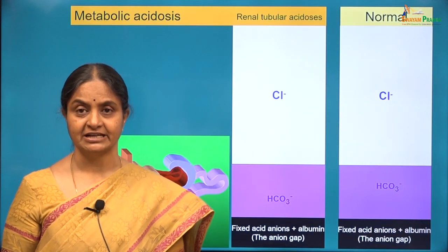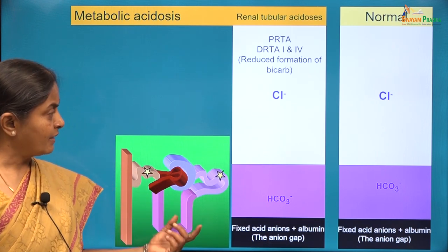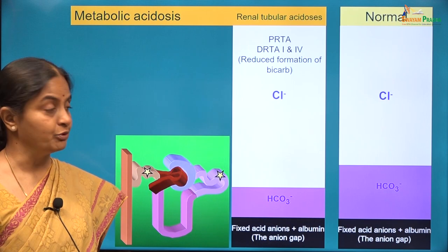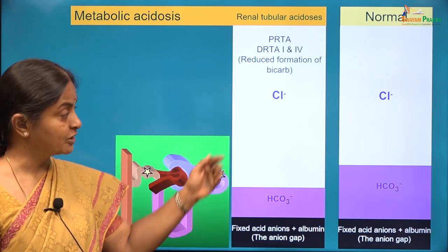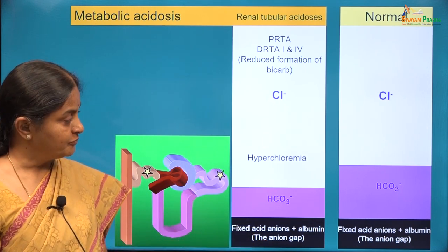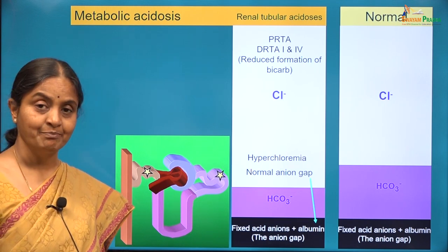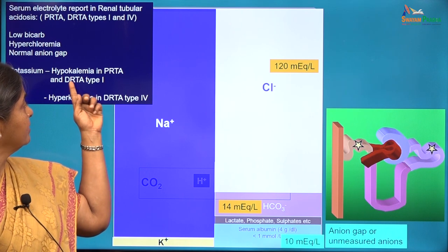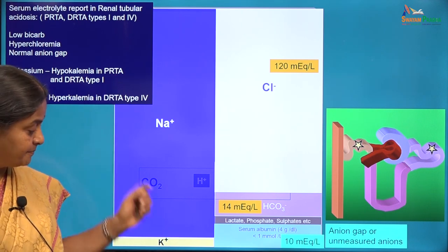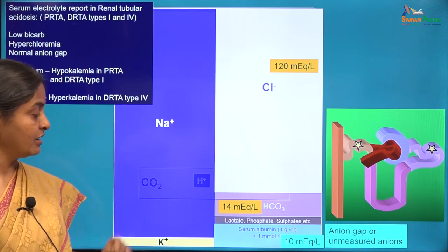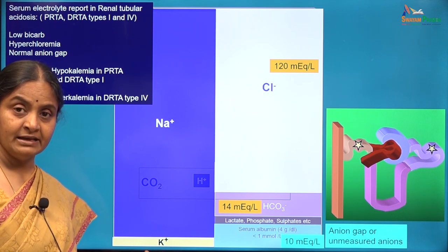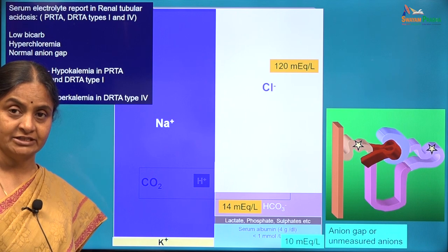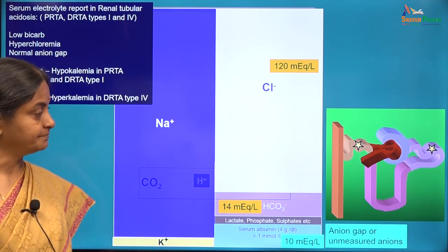In these conditions, there is a primary reduction in bicarbonate formation and compensatory hyperchloremia to balance the cations present, so chloride levels will increase. In this case the anion gap is normal, so this is a hyperchloremic normal anion gap metabolic acidosis. In type 1 DRTA and type 2 proximal RTA there is hypokalemia, whereas in type 4 DRTA there is hyperkalemia just like other causes of metabolic acidosis.